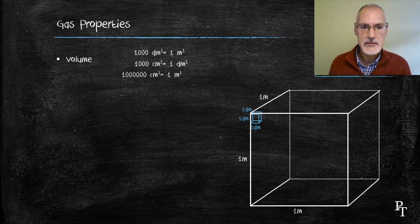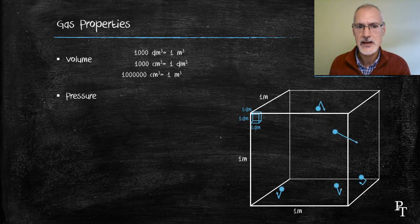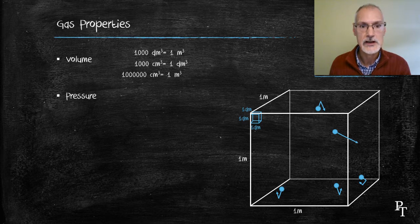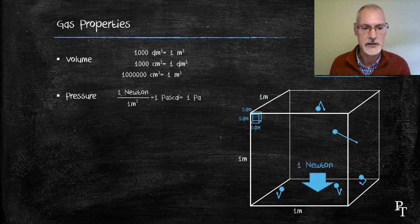Pressure. The SI unit for pressure is the Pascal. It's a measurement of the force that the particles are hitting the sides of a container with. We define one Pascal as the force of one newton exerted over a surface area of one square meter.